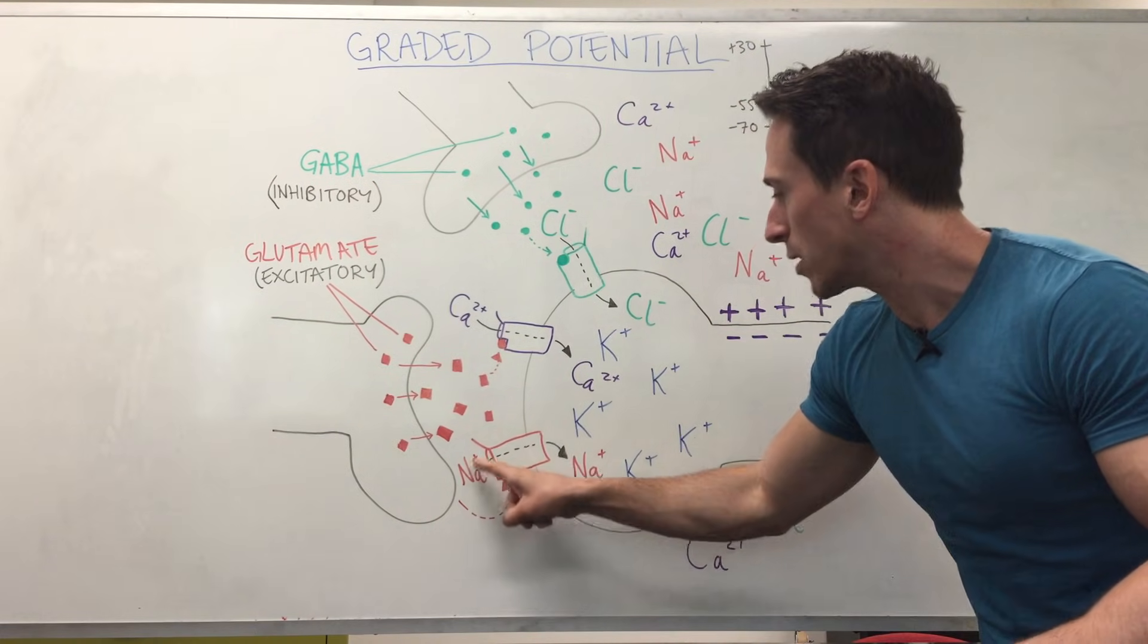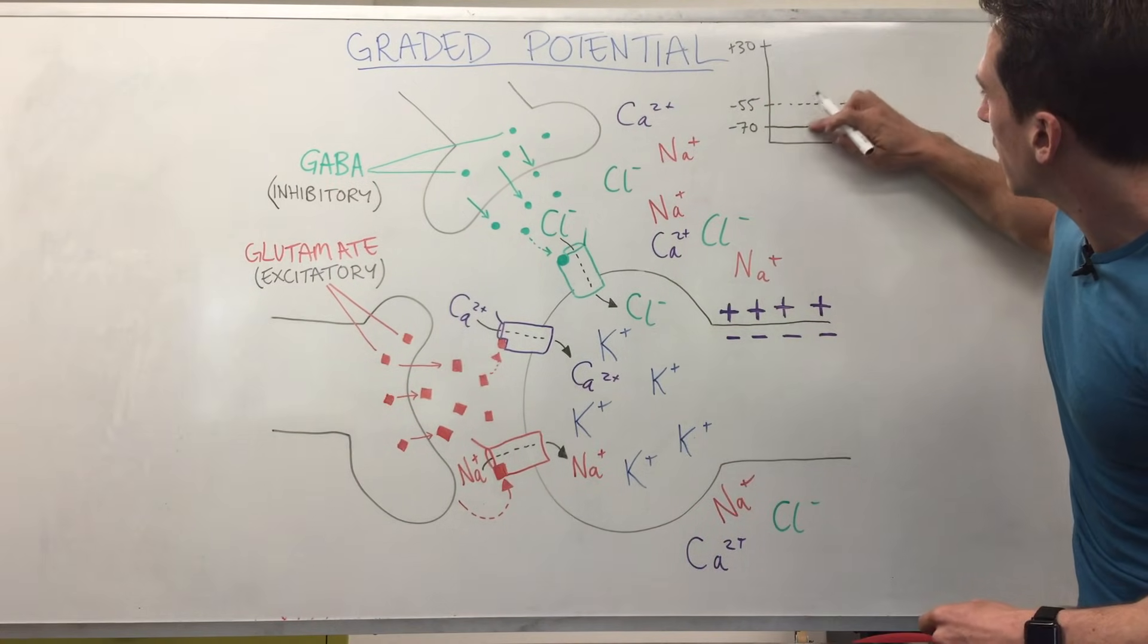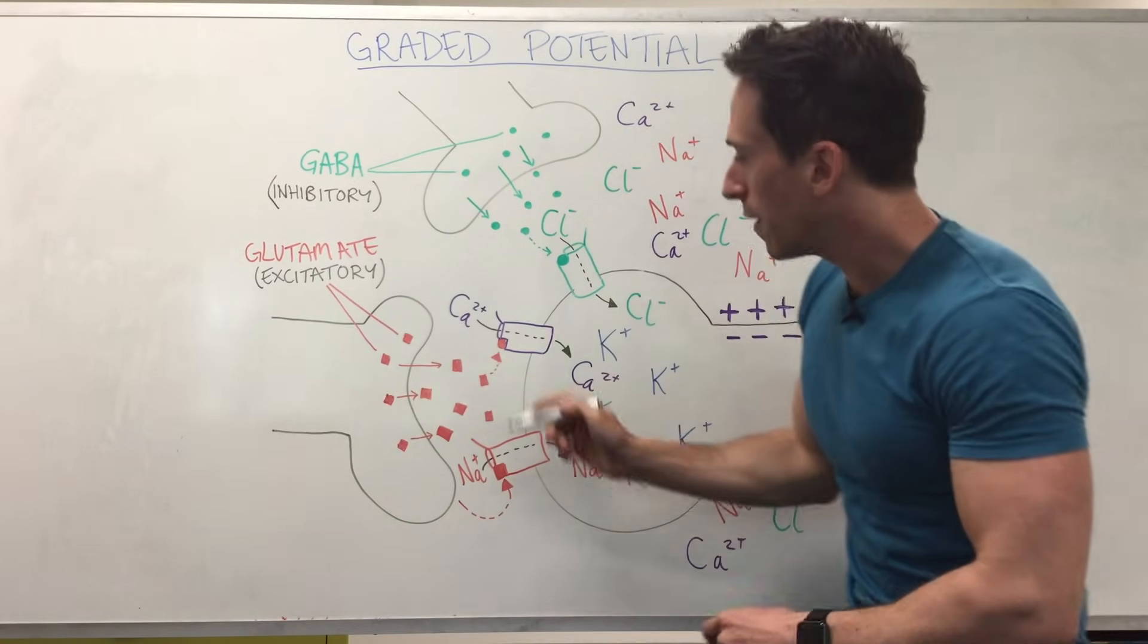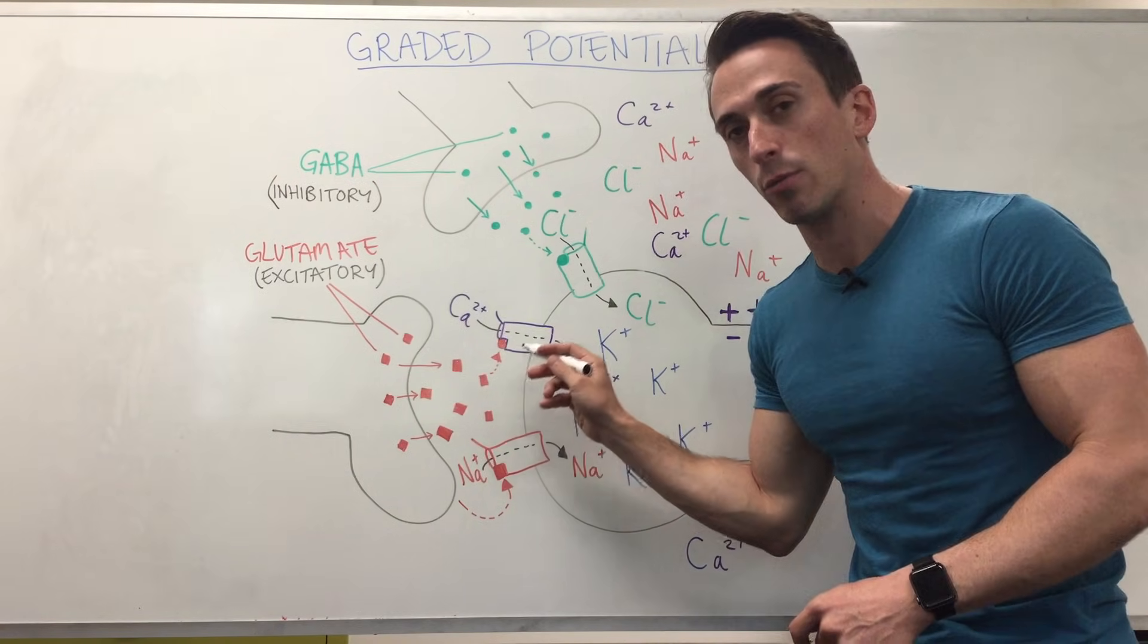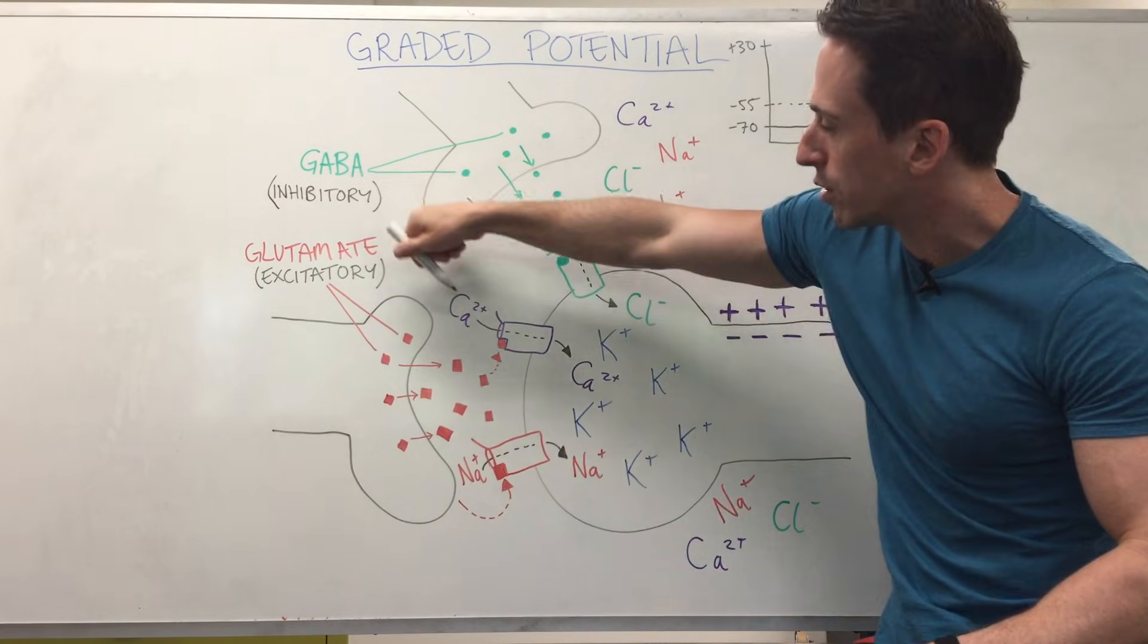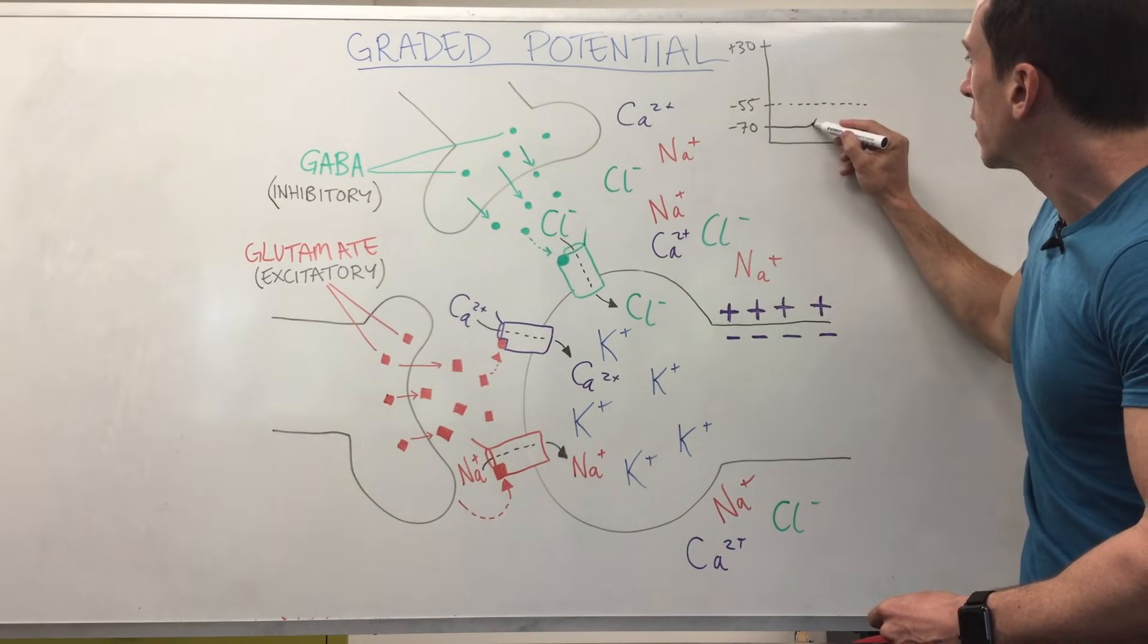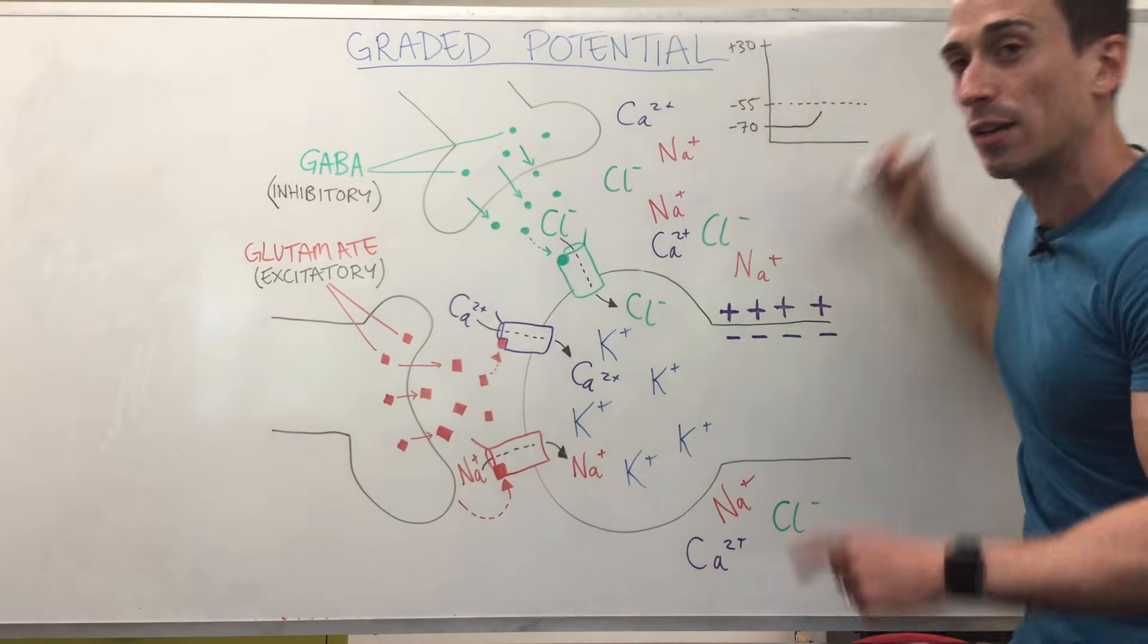That means as the positive sodium goes in, it takes its positive charge with it and it starts to get a little bit more positive inside the cell. Now this same thing happens if the excitatory glutamate neurotransmitter binds to another type of glutamate receptor called a calcium receptor, which flips its lid open and positive calcium comes in as well. If positive calcium comes in, it becomes a little bit more positive inside and again, starts to move closer and closer to this threshold of negative 55.